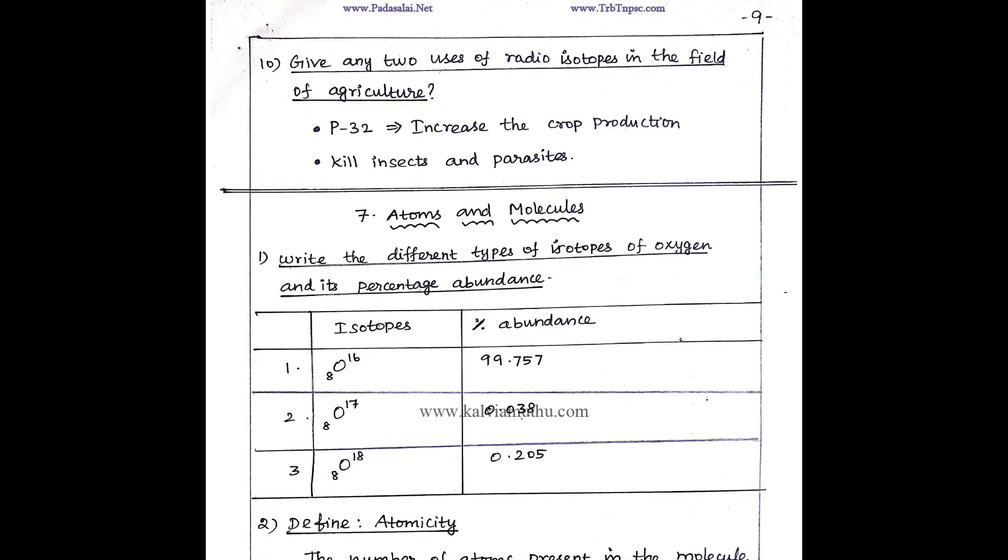Give any two uses of radio isotopes in the field of agriculture. How do you use radio isotopes? P-33, Phosphorus. To increase the crop production. To kill insects and parasites also.